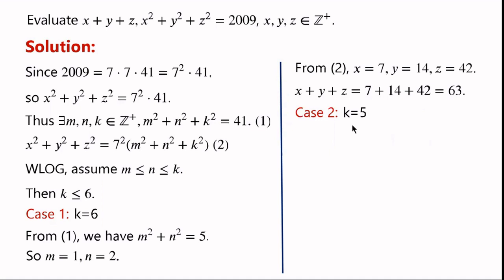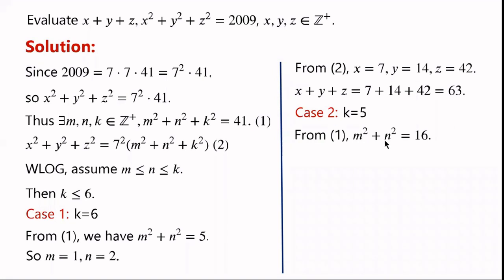Case 2: k equals 5. Then equation 1 becomes m squared plus n squared equals 16. There are no positive integers m, n such that m squared plus n squared equals 16. So this case is discarded.